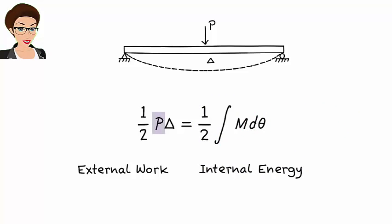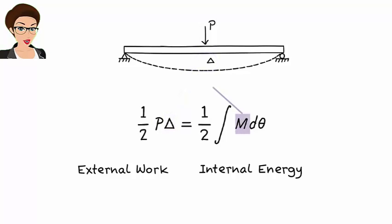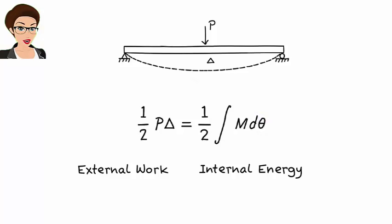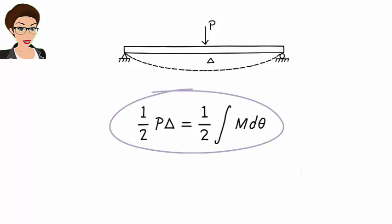On the left side, p is the applied load and delta is the displacement under the load. On the right side, m is the bending moment in the beam and theta is the slope of the elastic curve, both due to the beam's deformation. We can use this equation to calculate delta, the displacement under the load, as was demonstrated in a previous lecture.